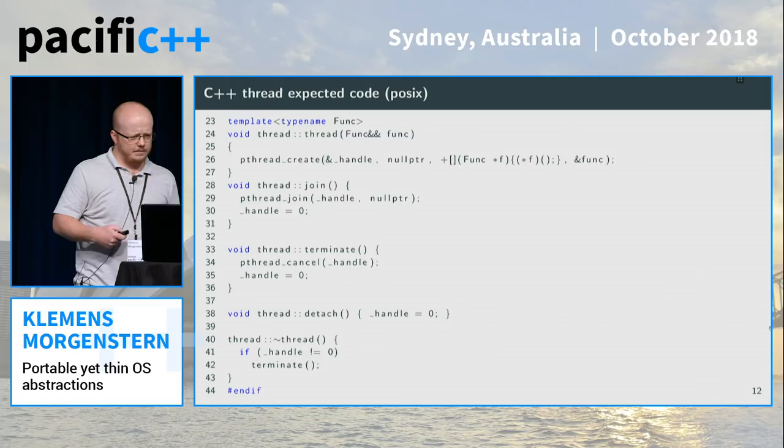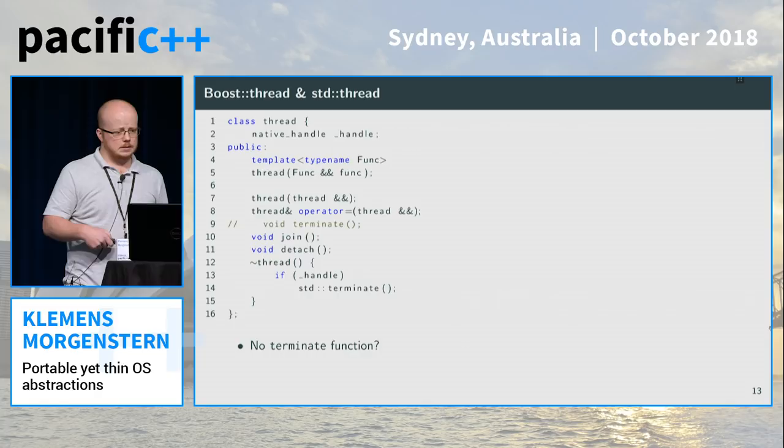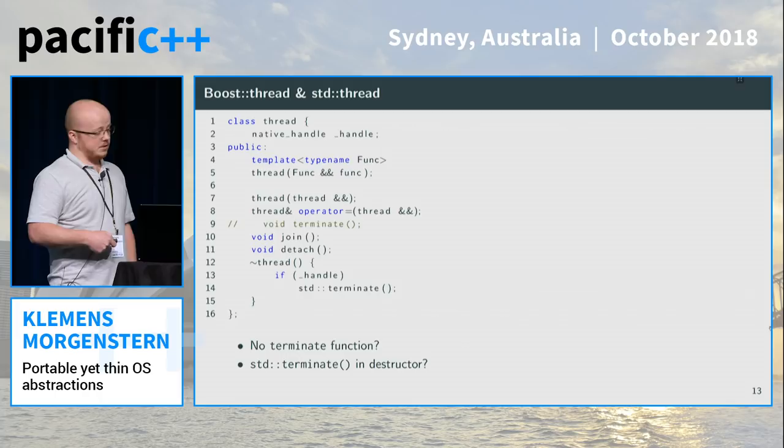Now if you look at the actual standard implementation, broadly speaking it looks different: we don't have a terminate function, and the destructor calls std::terminate. std::terminate terminates the thread all right, but not only that thread — it terminates the whole application. So why do we have std::terminate in the destructor instead of a terminate function?